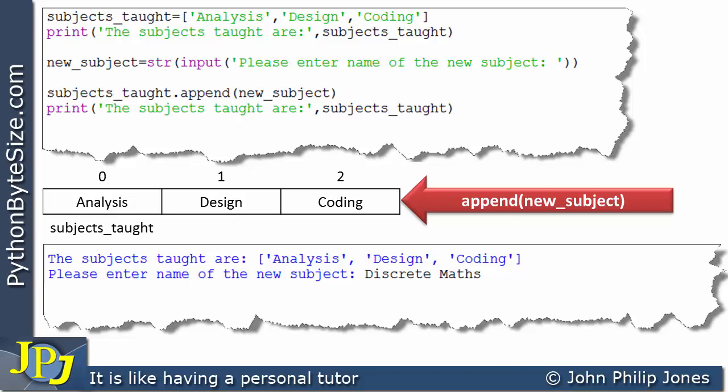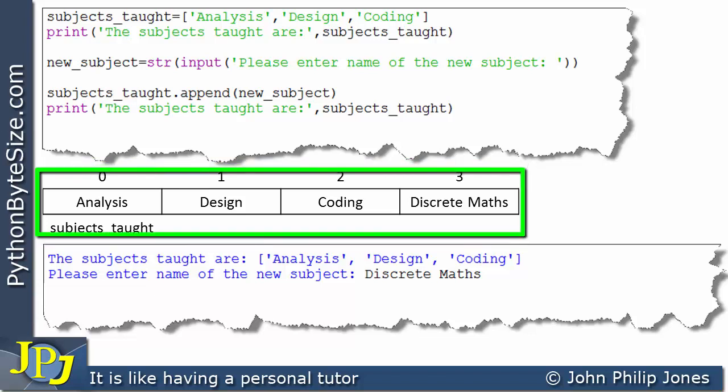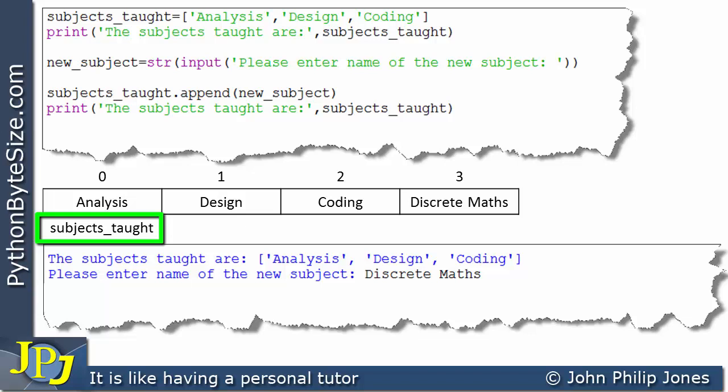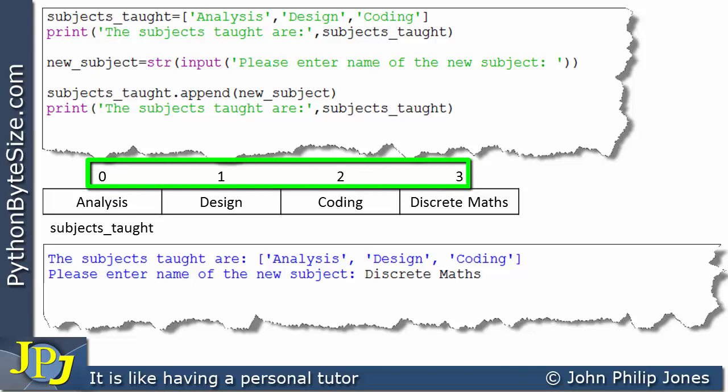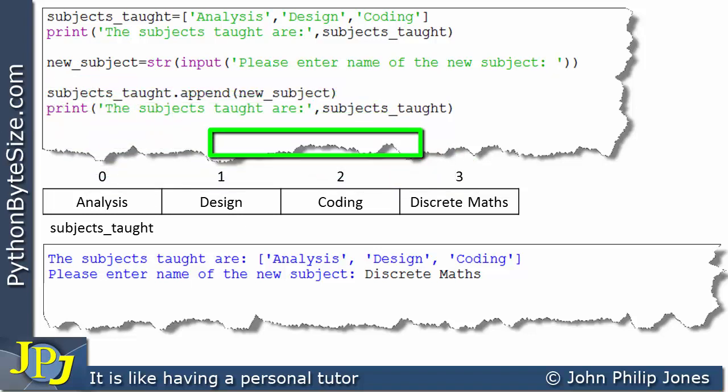And diagrammatically, we can show that as follows. If you now look at the list, you can see it has four elements. It still has the same name. And you can see that the index now goes from zero all the way up to three. And what this message has done, it is added to the end of the list the discrete maths string. And adding to the end of a list, as shown here, is what we describe as appending. When you append, you add to the end.